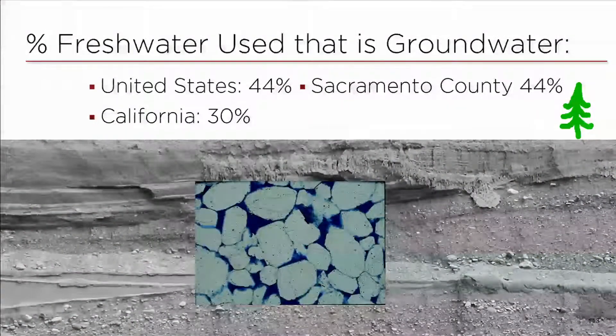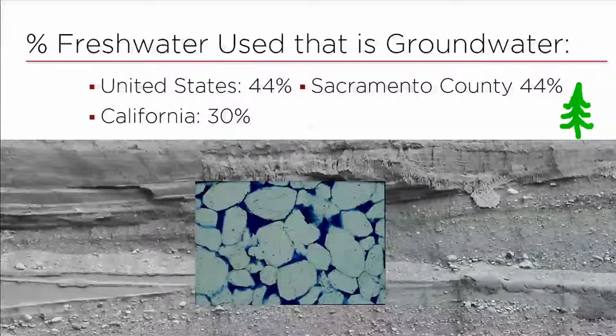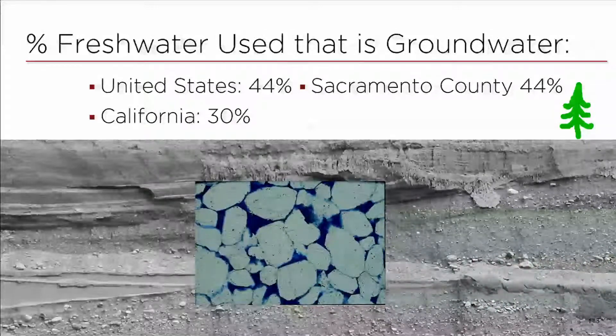But we use a lot of this groundwater, even though we can't see it. 44% of the fresh water used in the United States is groundwater. In California, that number is 30%, and when I looked up the number for Sacramento County, 44% of your fresh water is groundwater. And these are the numbers in a typical year. In times of drought, that's when our groundwater becomes very important.